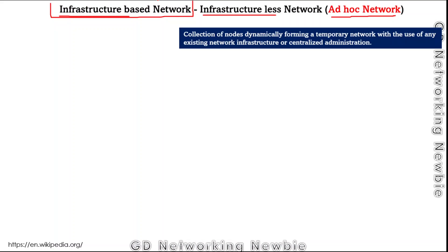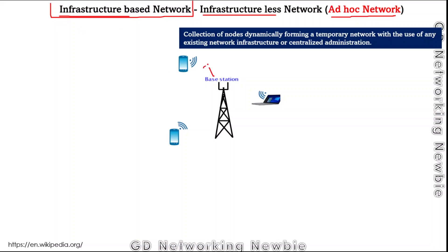An infrastructure-based network is a collection of nodes — nodes like laptops, cell phones, or tablets — which can transmit and receive signals. In an infrastructure-based network, these nodes dynamically form a network using an existing infrastructure like a base station. In mobile communication we have a tower, and the nodes will be under the control of a centralized administration. The nodes can communicate with each other, but communication takes place with the help of this central entity.